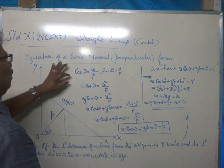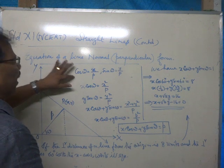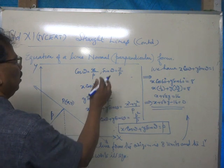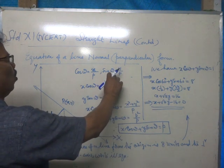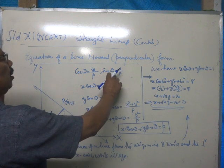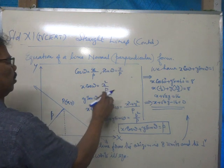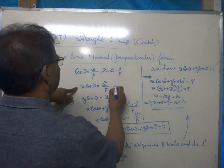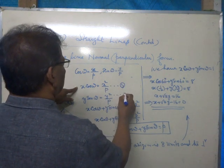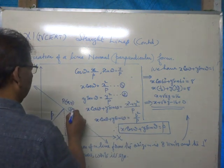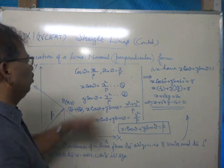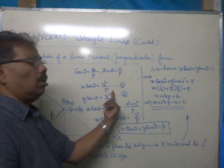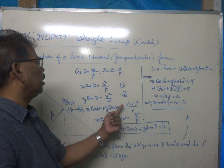Now, multiplying by x, on the left it is x cos omega, and the right it is x squared by p. Here multiplying by y, we get y sin omega is equal to y squared by p. We shall add them together. Equation one plus equation two, that is x cos omega plus y sin omega. Here we have common denominator p, x squared plus y squared by p.